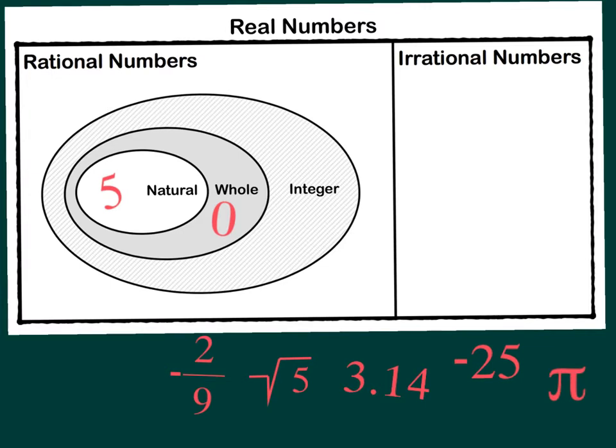Our next example, negative 2 ninths. Well, we would not count and say that fraction. It's not a whole number. Now some folks think it's an integer because they see that it's negative, but that's not true.